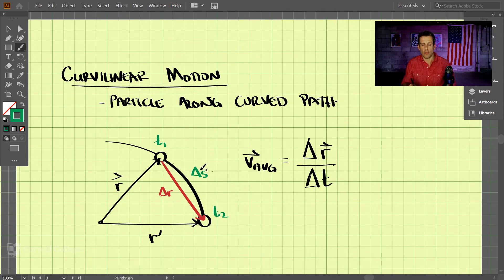to get a more accurate representation or the instantaneous velocity, we would want t1 and t2 to be a closer time together. The closer these particles become to each other, the better that the change in r approximates the change in s. The gap between these two becomes smaller and smaller. So for the instantaneous velocity,